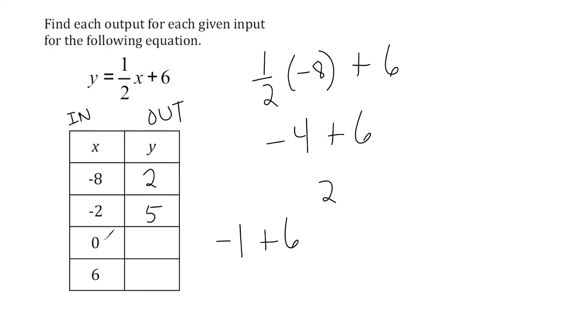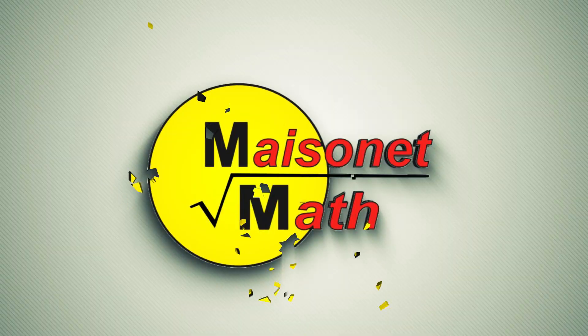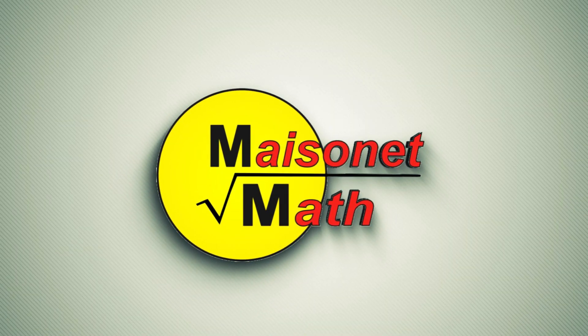Now let's take half of 0. Well, you can't take half of nothing, so that still leaves you with nothing. 1 half times 0 is still 0, and then add 6, that is just going to give us 6. All right, now let's take half of this input. Half of 6 is 3, and 3 plus 6 is 9.